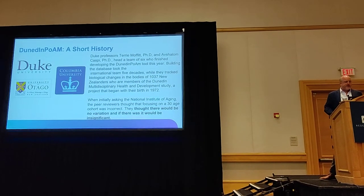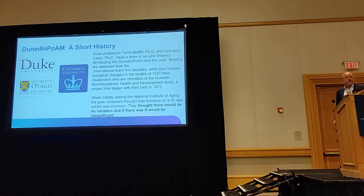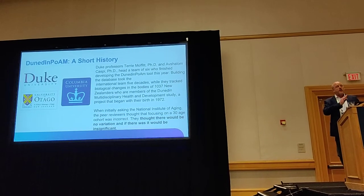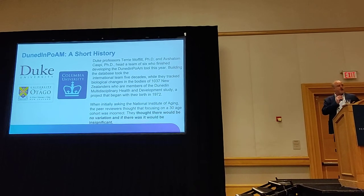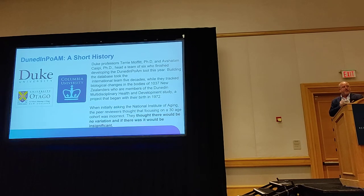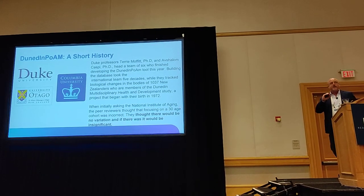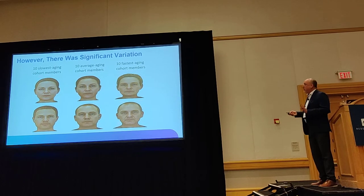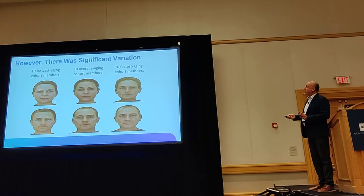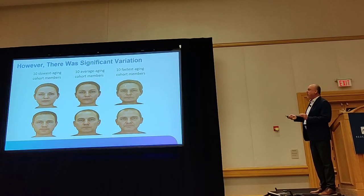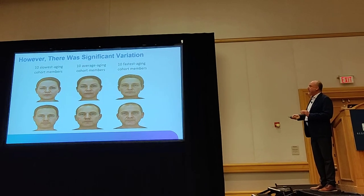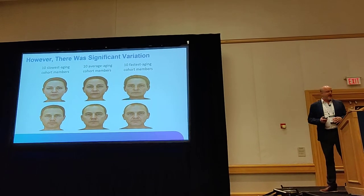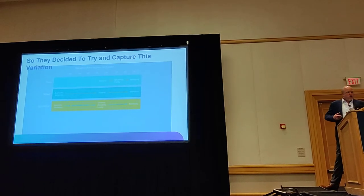This was developed between Duke, Columbia, and the University of Otago. They theorized they could get a group of 30-year-olds together and measure different paces of aging. Traditional reviewers at the National Institute of Aging believed they would not see significant variation among 30-year-olds, but in fact they did. As a simulation shows, people of the same age can have average, slow, or fast aging profiles.